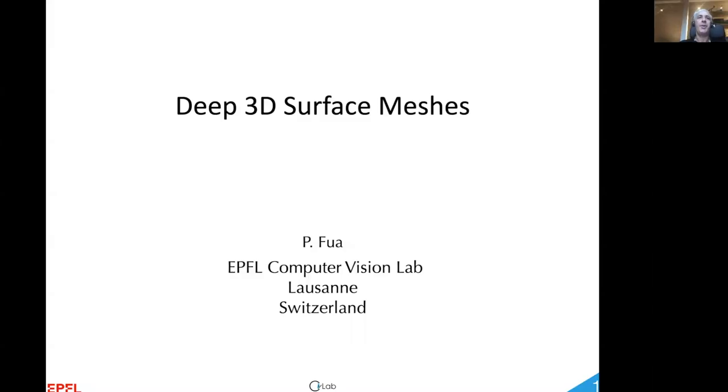I would like to present our work on making the most out of deep networks when trying to model 3D surfaces as triangulated meshes. This begs the question of why we would want to use meshes.